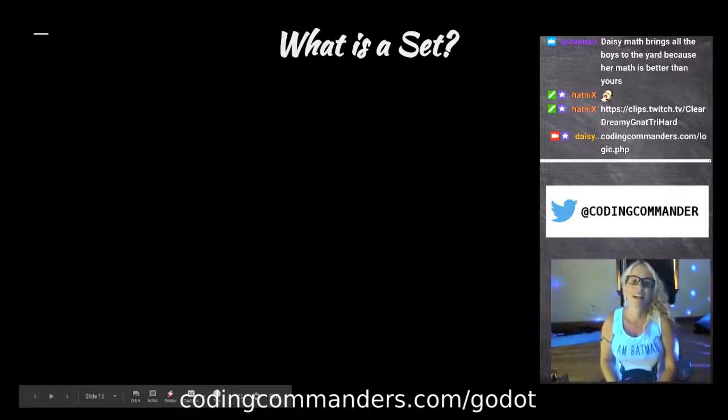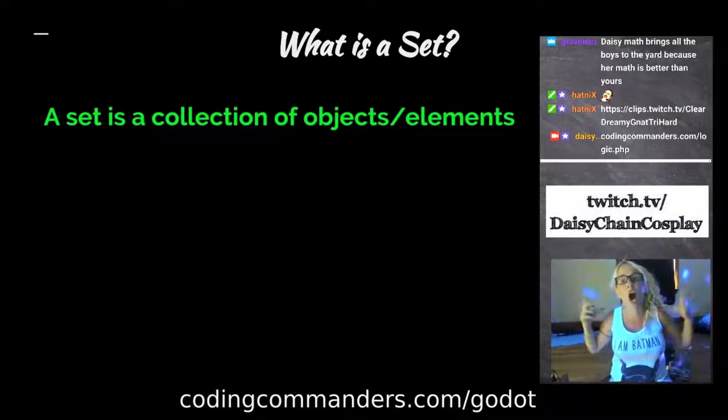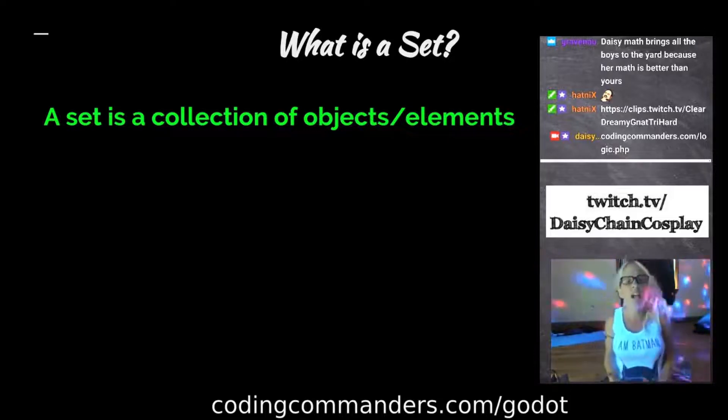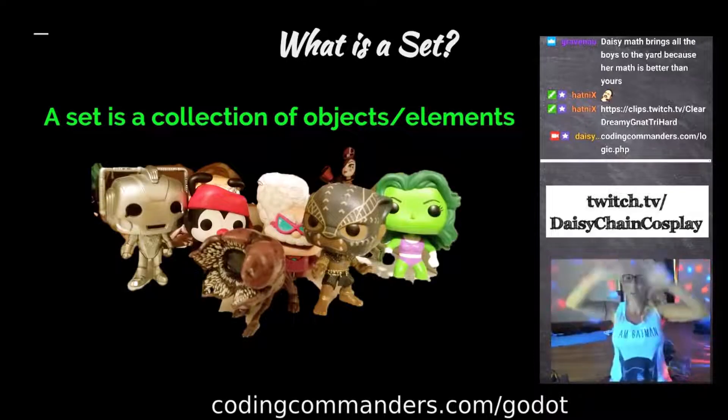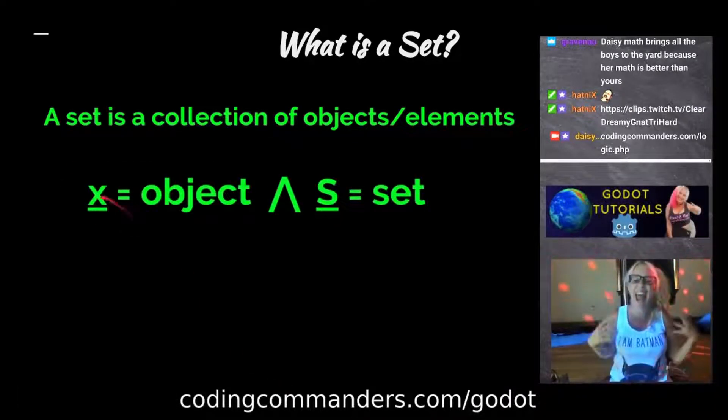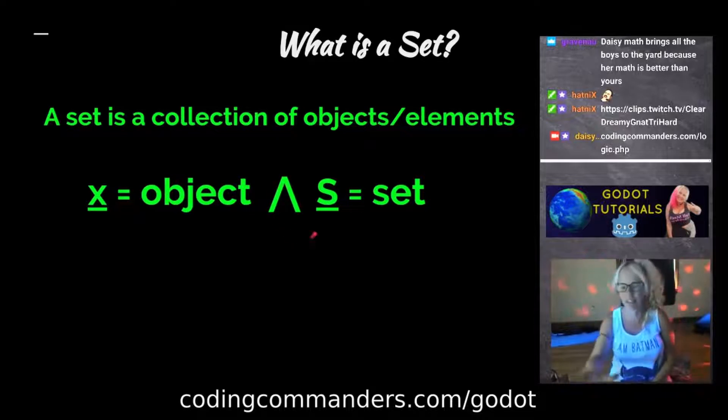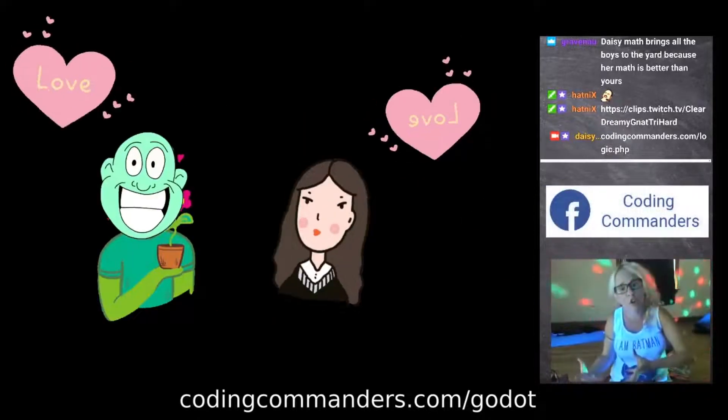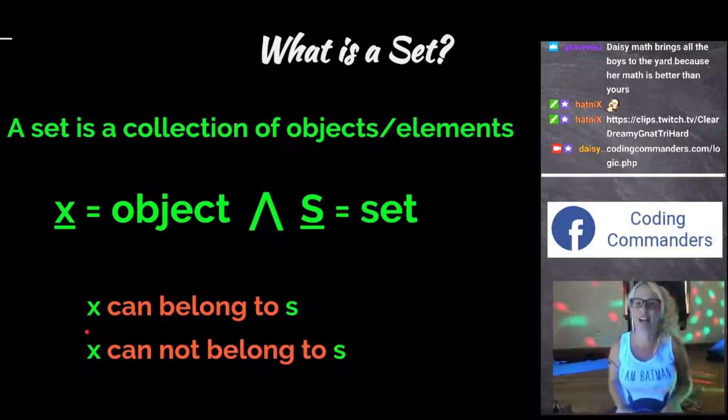What is a set? A set is a collection of objects or elements. It's a collection of things. If you have a set of Funko Pops, you got multiple Funko Pops. If X equals an object and S equals a set, then X can either belong to S or X cannot belong to S.